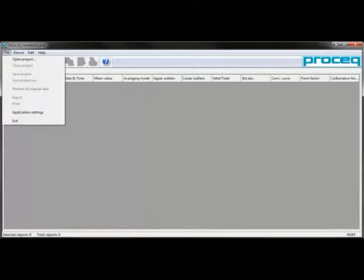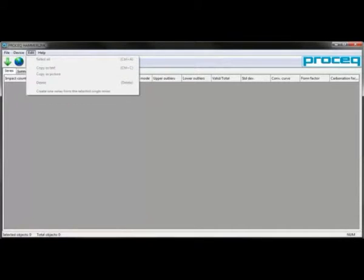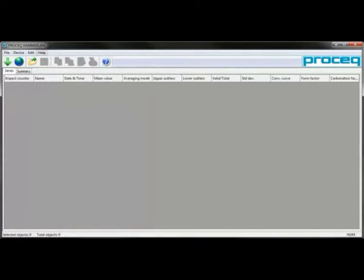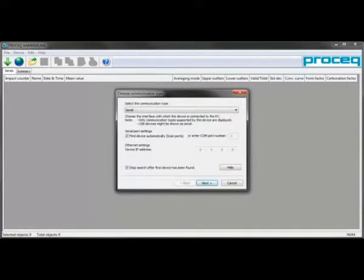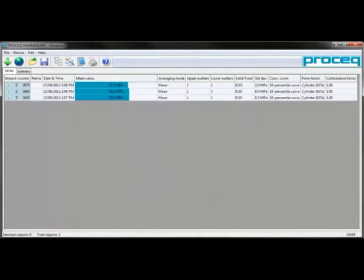There is a file menu, device menu, edit menu, and help menu available, and the most useful options are available as a number of icons. Clicking the green icon with an arrow will allow you to download data from the hammer. This is through a virtual COM port, and we now see a summary of the three series I have gathered with this Silver Schmidt.